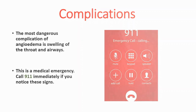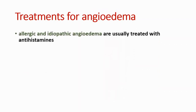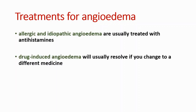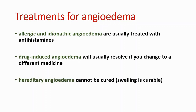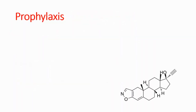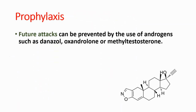For treatment, we use antihistamines if the condition is allergic or idiopathic. For drug-induced angioedema, we should change the drug being used and the problem will resolve on its own. We cannot cure hereditary angioedema, but to prevent future attacks we can use androgens such as Danazol, Oxandrolone, or Methyl Testosterone.